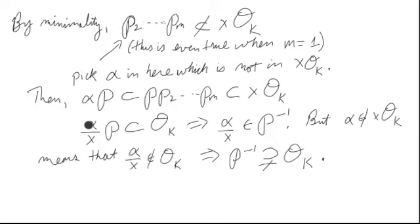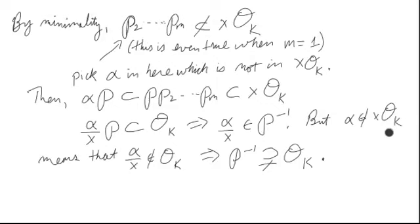But we chose alpha so that it is not in (x)·OK, which means that alpha/x is not in OK. So alpha/x is in P⁻¹ but not in OK, which means P⁻¹ non-trivially contains OK — it's strictly bigger.